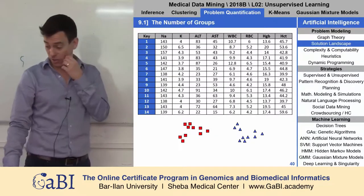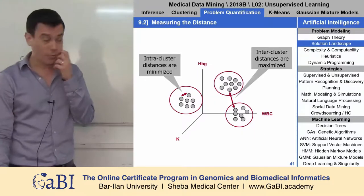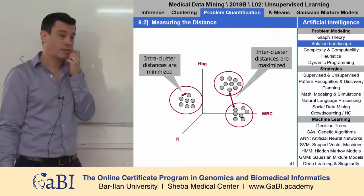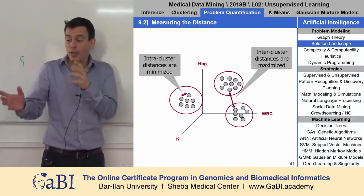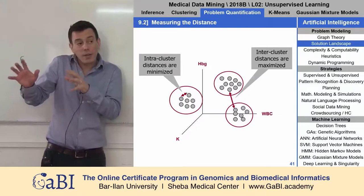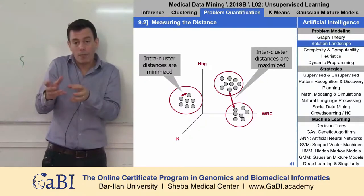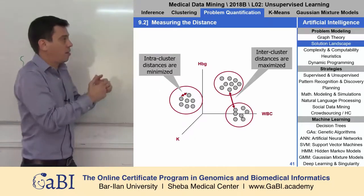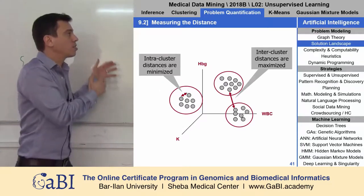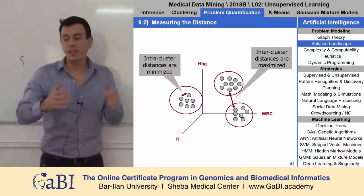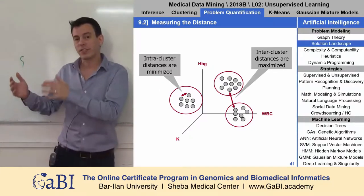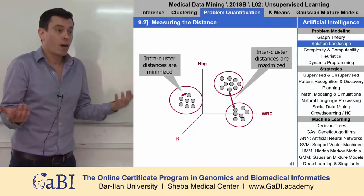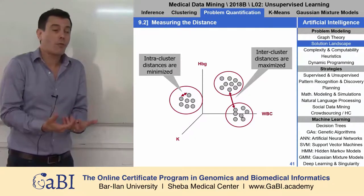So this is a question that we cannot answer. There is no answer to this question. Because what we ask the computer to do is to come up with clusters, so that the intra-cluster distances are minimized and the inter-cluster distances are maximized. And I don't know what is the correct number of groups.